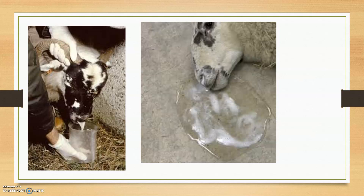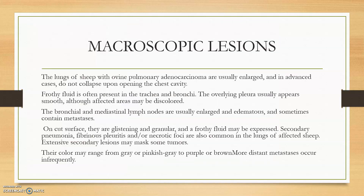Frothy nasal secretions come out of the nose due to excess production of exudate materials in the alveolar passage and tracheal passage. Macroscopic lesions include involvement of mediastinal lymph nodes and lung-related lymph nodes, with hemorrhage, and sometimes atrophy of the lymph nodes, fibrinous pleuritis, secondary pneumonia, and necrotic foci on the lung tissues.